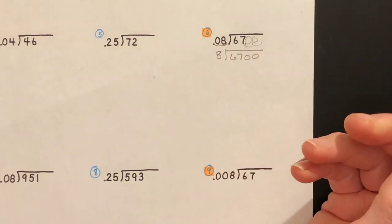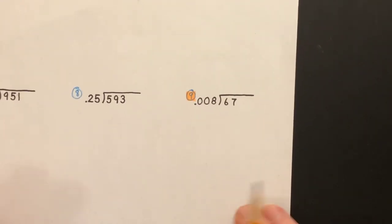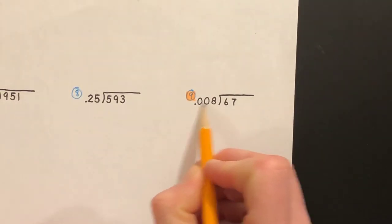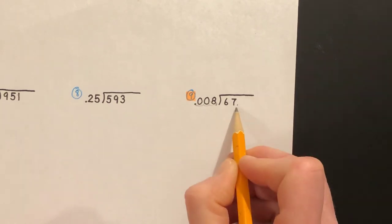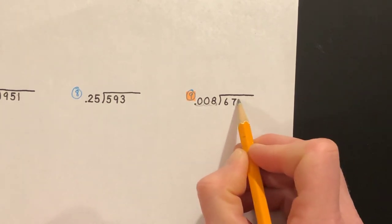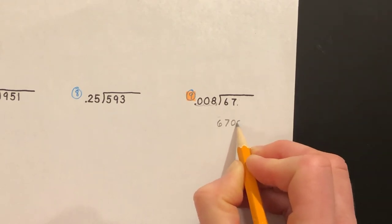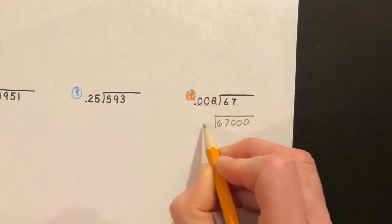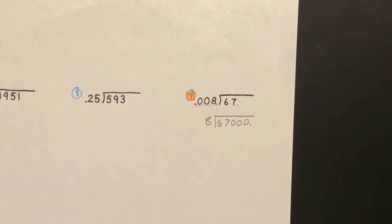Down to number nine: to make this a whole number, eight thousandths, you need to move the decimal over three places. So if your decimal starts here, to move it three places means you're going to have three zeros - so 67,000 divided by eight, and then your final decimal is there. I guess we can go ahead and do one of these numbers together.